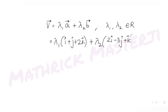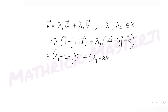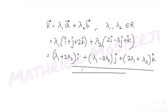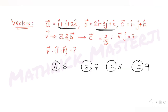Expanding, vector v = (λ₁ + 2λ₂)î + (λ₁ - 3λ₂)ĵ + (2λ₁ + λ₂)k̂. Now, the question tells us the projection of v on c is 2/√3.